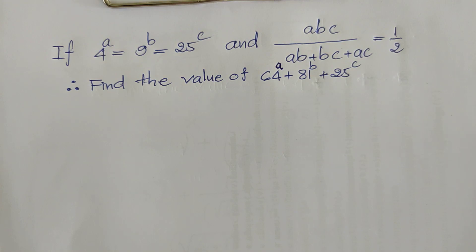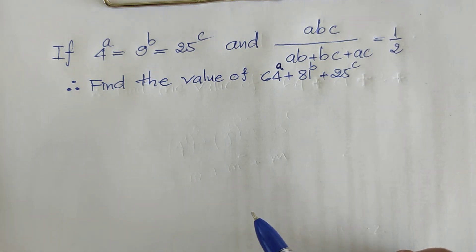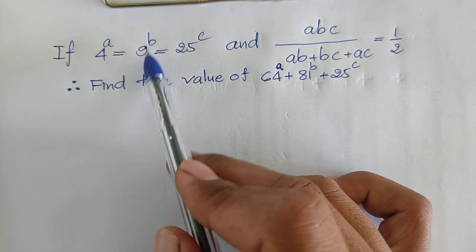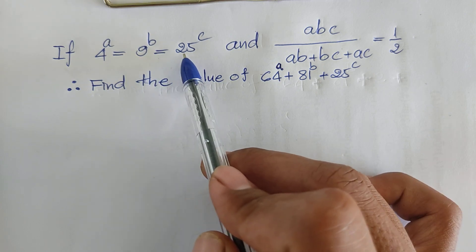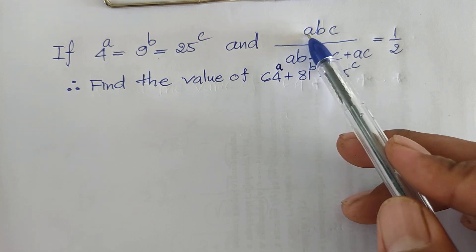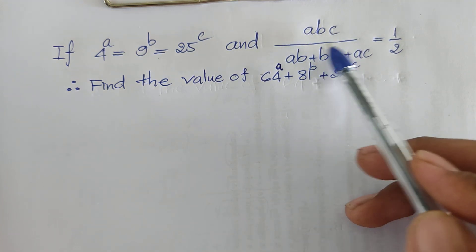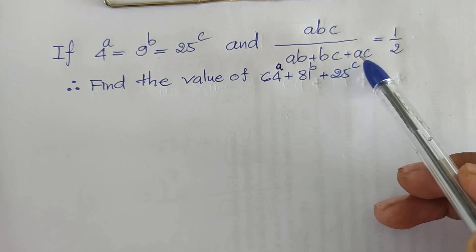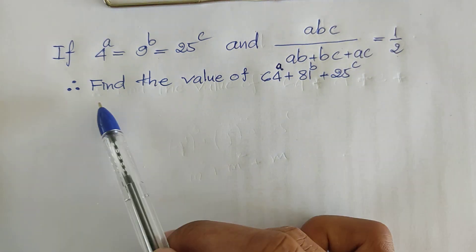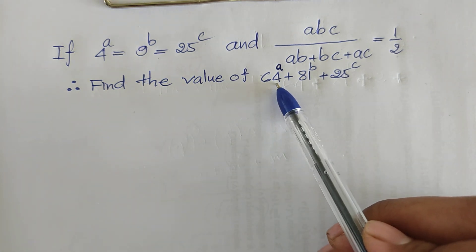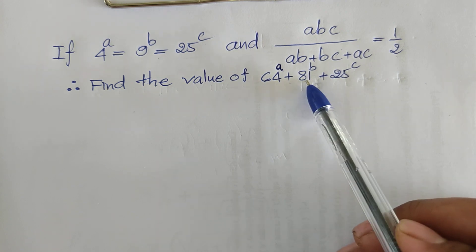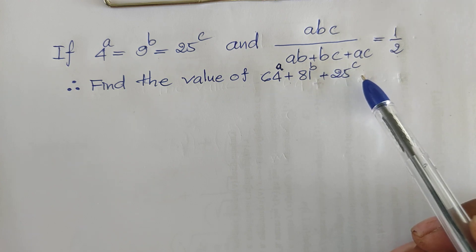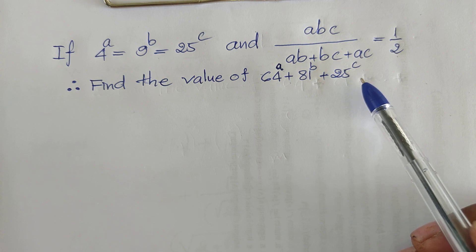Hello everyone, welcome to my YouTube channel. Today I have one exercise: if 4^A = 9^B = 25^C, and A·B·C divided by (A·B + B·C + A·C) equals 1/2, find the values of 64^A + 81^B + 25^C. If you know how to solve this, please pause my video and do it.